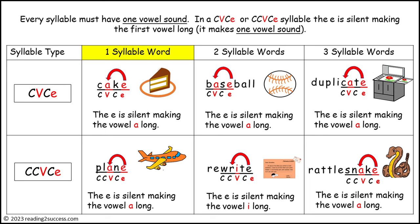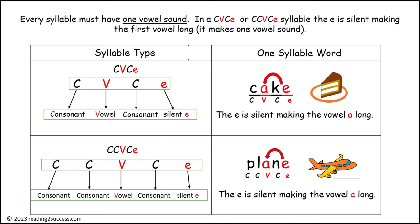Every syllable must have one vowel sound. In a CVC silent E or CCVC silent E syllable, the E is silent, making the first vowel long. Together they make one vowel sound, as in the one-syllable words cake and plane, two-syllable words baseball and rewrite, and three-syllable words duplicate and rattlesnake. CVC silent E represents a consonant-vowel-consonant-silent E syllable as in cake, and CCVC silent E represents a consonant-consonant-vowel-consonant-silent E as in plain.